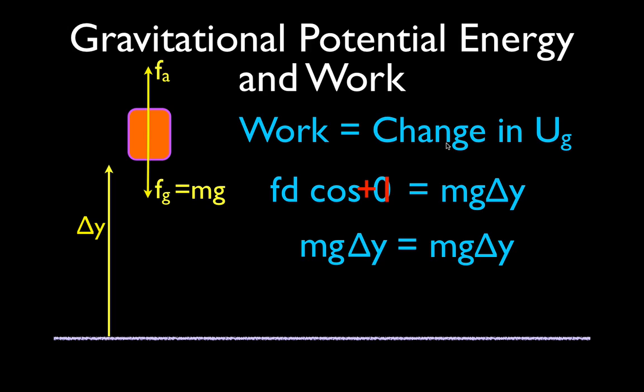We talked about the definitions and the terms, did an example of how to calculate the change in potential energy, and I showed you how potential energy and work are related — the amount of work done is equal to the change in gravitational potential energy. Thank you very much for watching. I hope you found that helpful. Please give me a thumbs up or a comment below, and we'll see you in the next video.